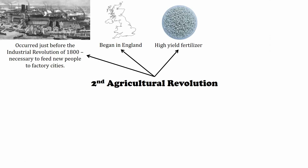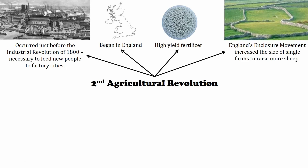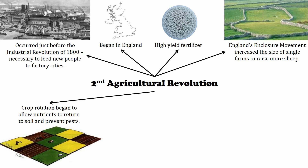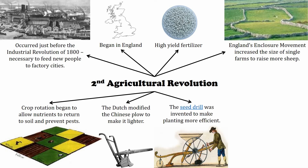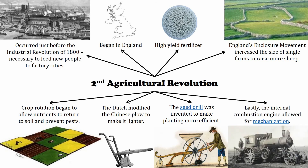That leads us into the second agricultural revolution, which started around 1800, just before the Industrial Revolution. It started in England, when things like fertilizers and nitrogen fixers came about. They started enclosing fields to keep animals on privatized land. New ideas like crop rotation and leaving a field fallow — where you don't grow in it for a season — emerged. Machines like the Dutch plow, a lighter plow from the Chinese, and the seed drill with uniform seed distribution and depth came about for better efficiency.